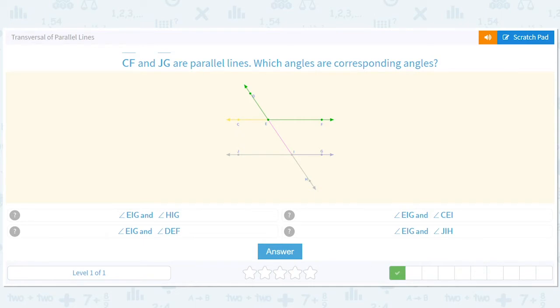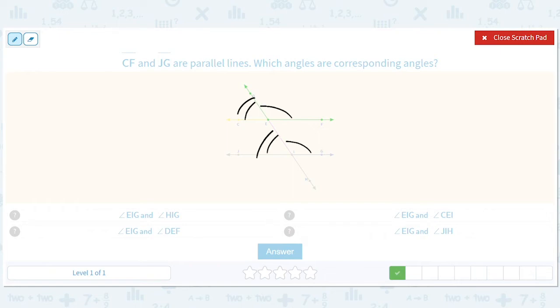CF and JG are parallel lines. Which angles are corresponding angles? Okay. So corresponding angles are like this angle corresponds to this angle, right. And this angle corresponds to this angle because this line creates a world with this transversal, right. And there's a similar world here. And in this corresponding world, this angle is like this angle and this angle is like this angle.